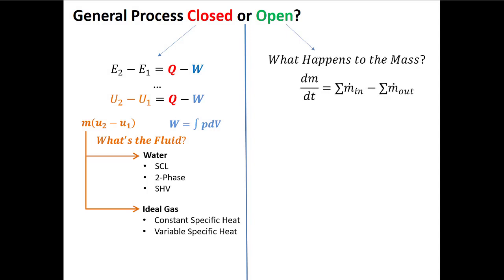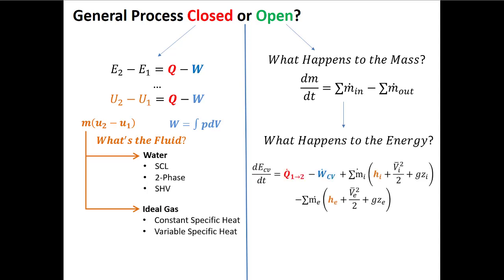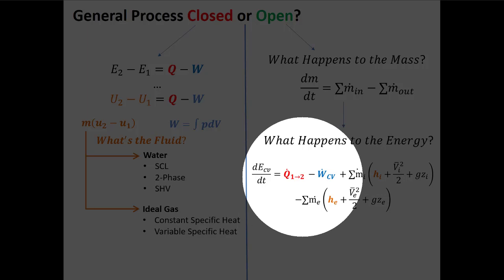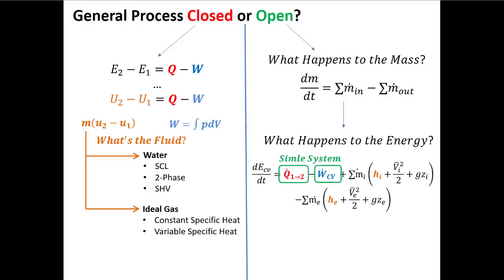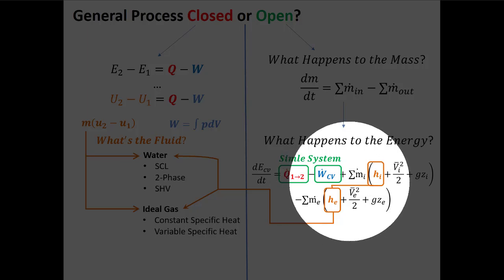For an open system, mass can come in and out, so we need to know what happens to the mass and the energy. Oftentimes in an open system, one of the two terms — heat or work — is zero. Often it's a simple system where the purpose of the component is like a turbine generating power, or a heat exchanger where we're adding or removing heat. We still get to the point where we need to fix a state, knowing specific enthalpy instead of specific internal energy.